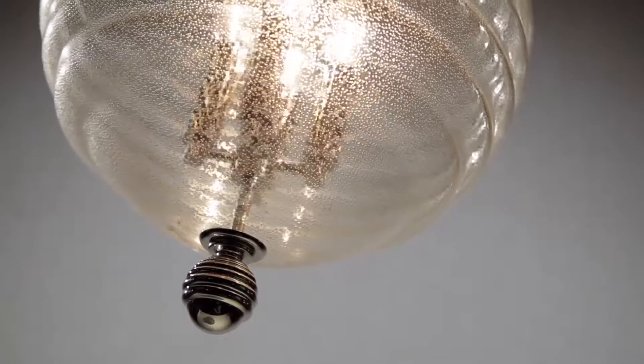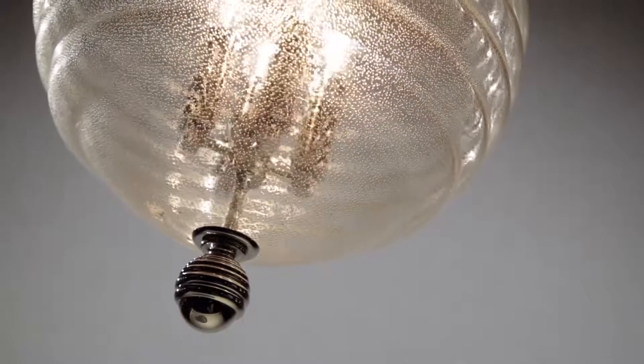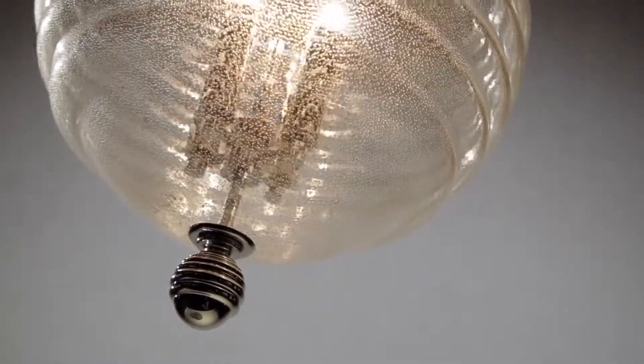Offered in aged brass, old bronze, or polished nickel, Coolidge is available in three pendant sizes and semi-flush mount.